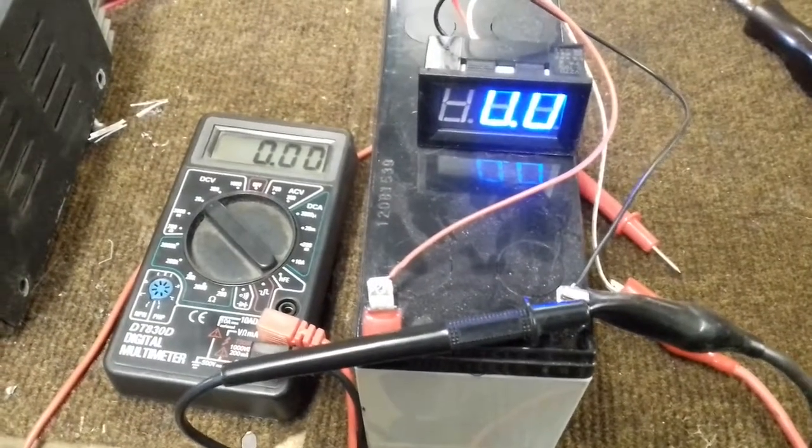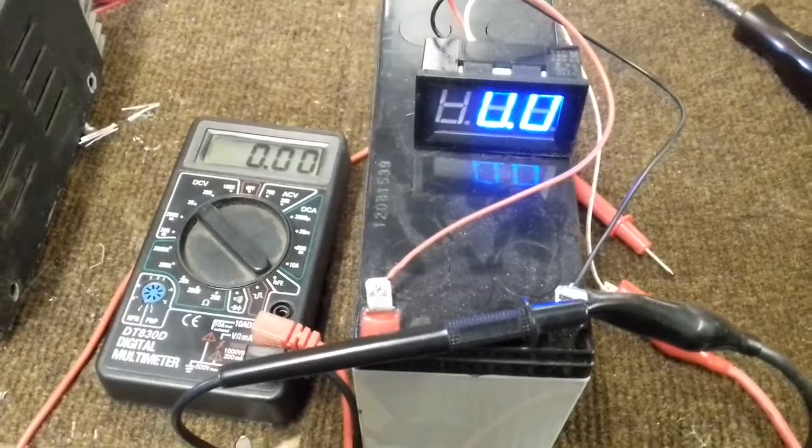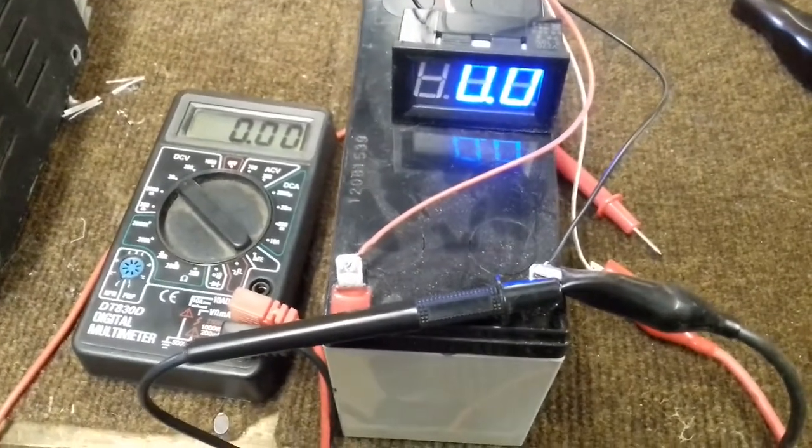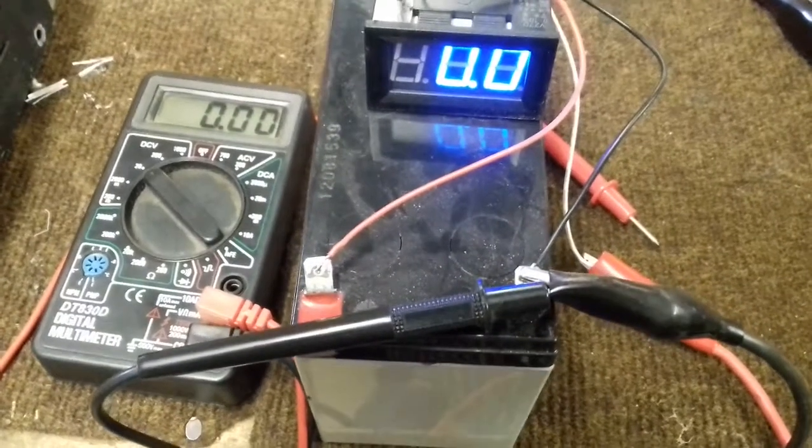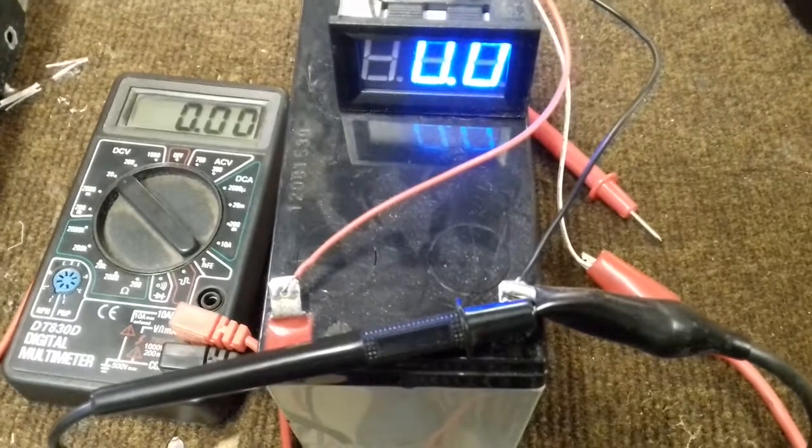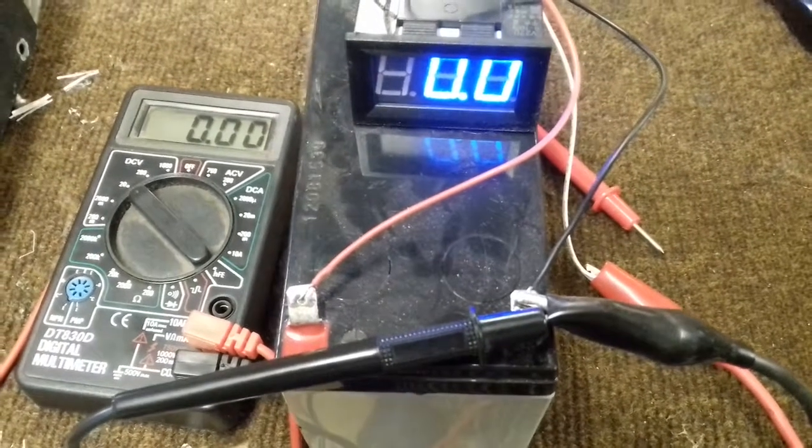This is a demonstration of the 0 to 99 volt panel meter. I have connected the positive and negative, the red wire and the black wire, to the battery providing power to the panel meter.